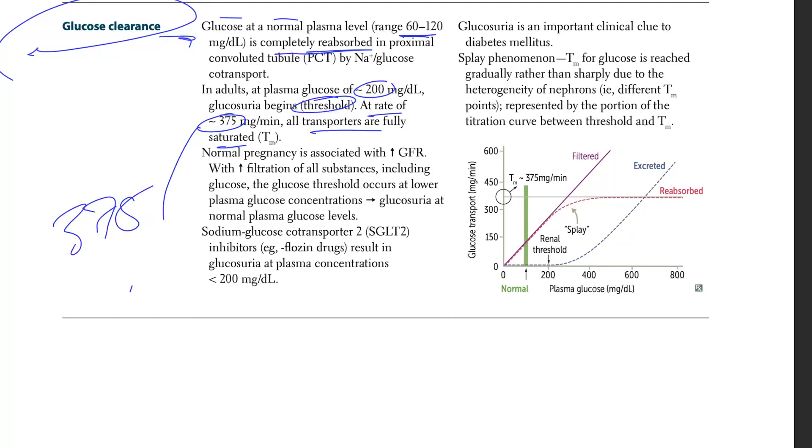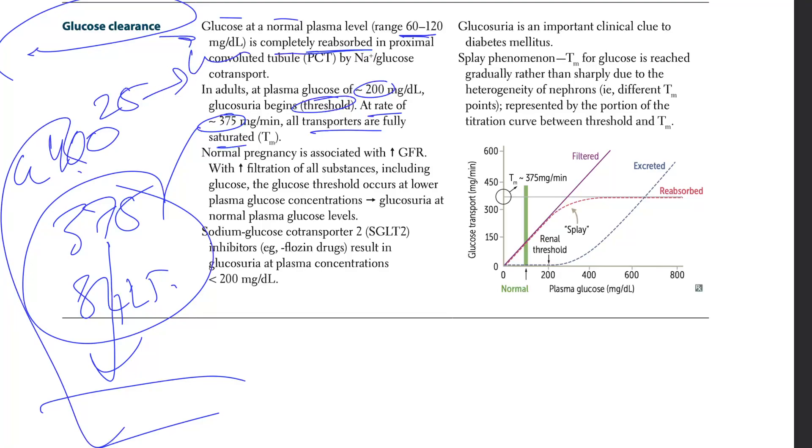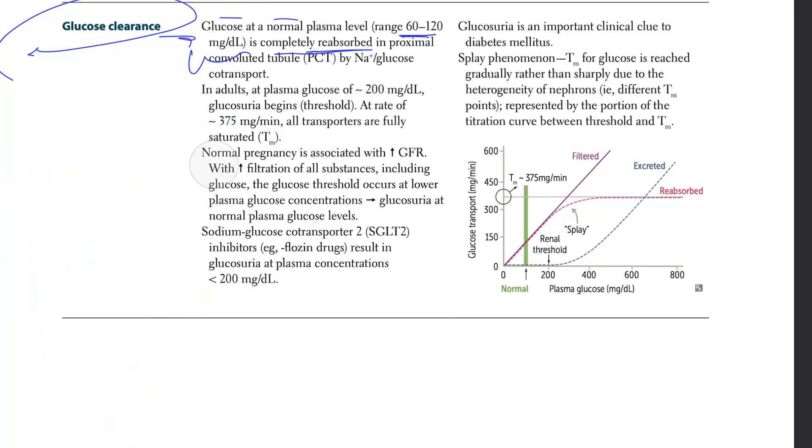Let's say you only have 375 SGLTs and they're working to bring those back into the blood. They're all used up, they're all saturated. So if you have 400 glucose level, that excess 25 has to go in urine because they can't reabsorb that excess 25 because you don't even have the channels for it. So here the case is saturation.